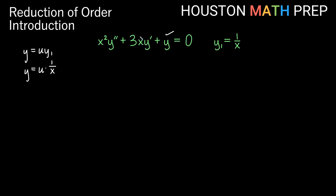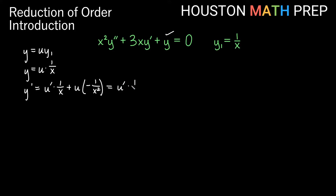I still need y prime and y double prime. If y is u times 1 over x, then y prime — be careful, both are functions of x, so this is a product rule. We get u prime times 1 over x as the first part, plus u times the derivative of 1 over x, which is negative 1 over x squared. So y prime equals u prime times 1 over x minus u times 1 over x squared.